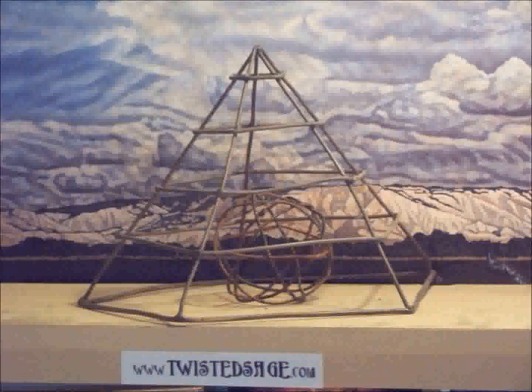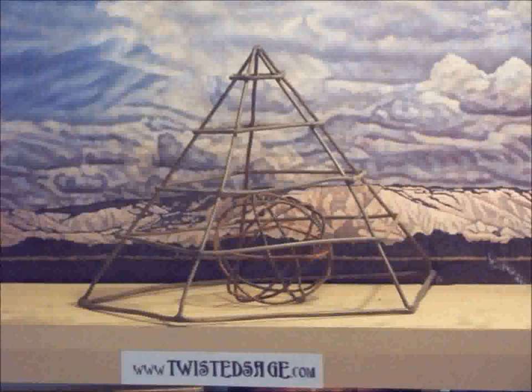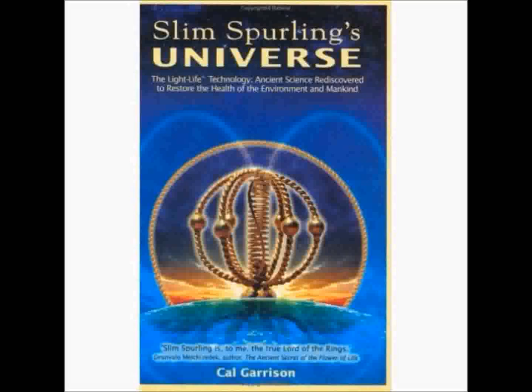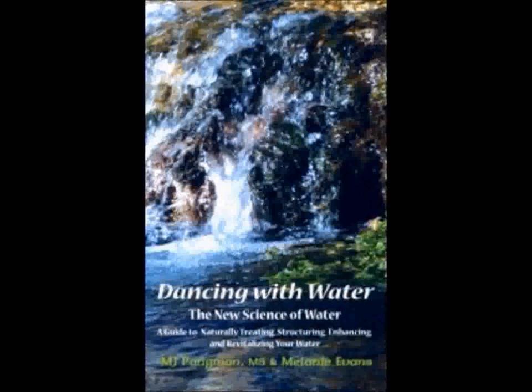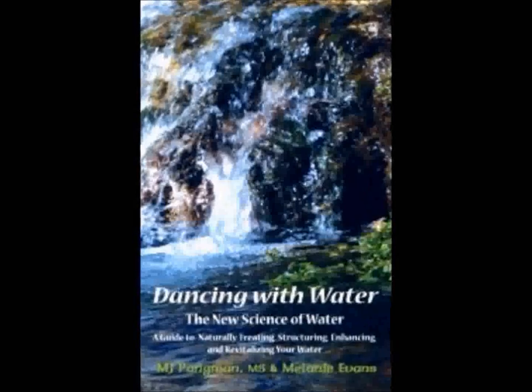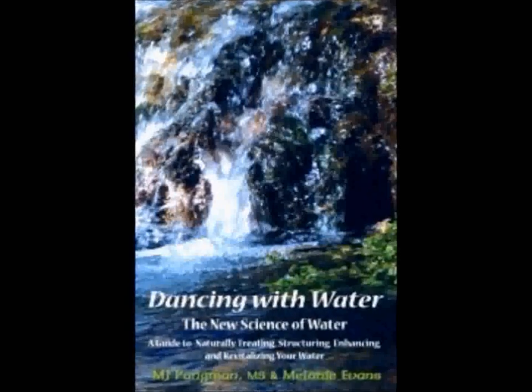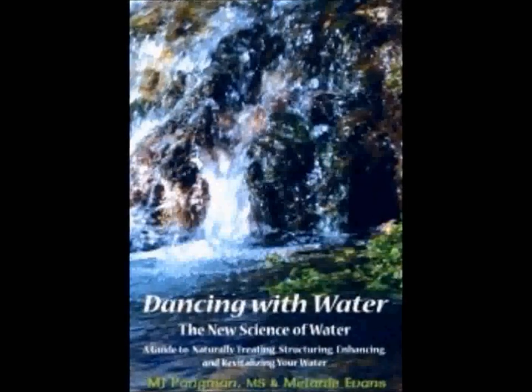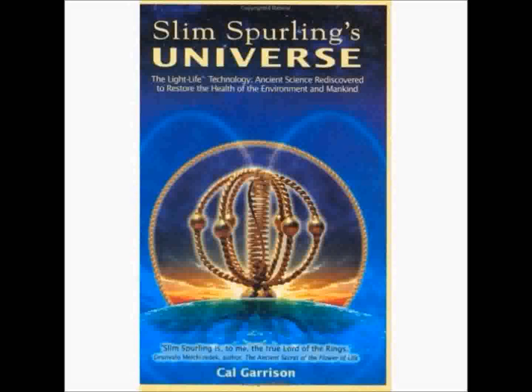A cubit is a measure of length. The sacred cubit, also known as the Pyramid Inch, was used as a standard unit of measure throughout the megalithic world. Most of this information can be found in Cal Garrison's book, Slim's Universe. The new book, Dancing with Water, contains some really good information on Slim and his rings as well. I recommend reading both.